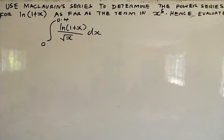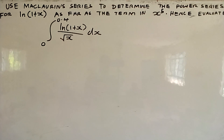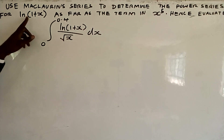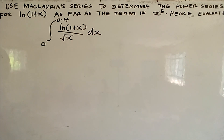Use Maclaurin series to determine the power series for ln(1+x) as far as the term in x raised to power 5. Hence evaluate the integral from 0 to 0.4 of ln(1+x) over root x with respect to x. The first thing we need to find is the power series of ln(1+x) using Maclaurin series.